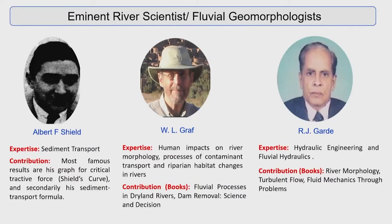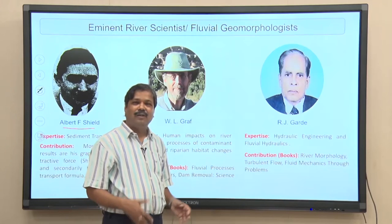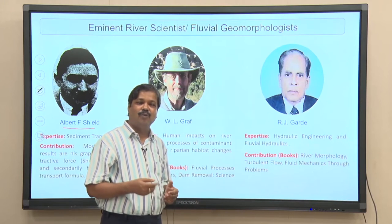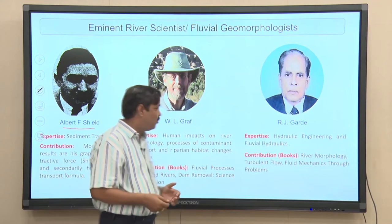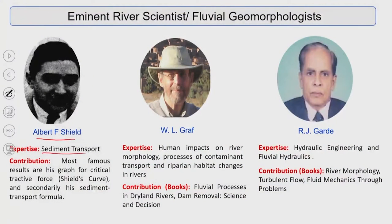Let us look at eminent river scientists. Albert Shields conducted early fluvial experiments trying to understand incipient motion — how sediment particles move from the bed. He developed the sediment transport formulas and Shields curves, or Shields numbers, which gave us early understanding of the complex process between water and sediment transport in river systems.